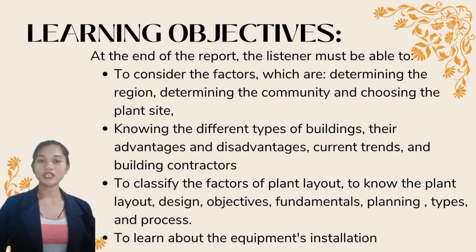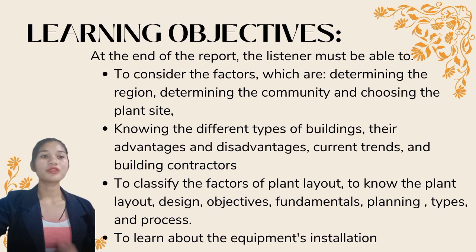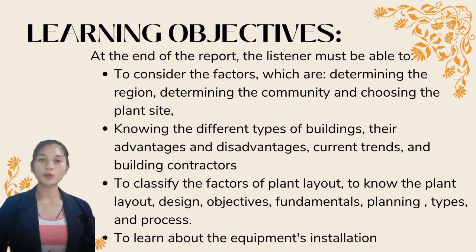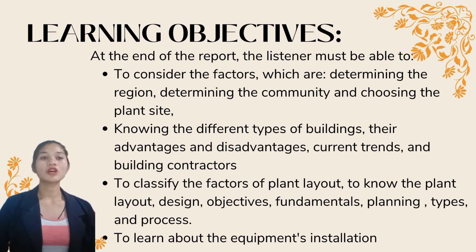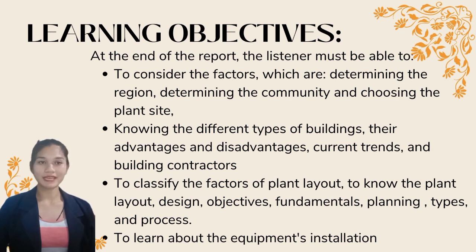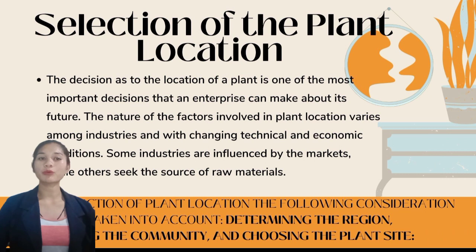Here are the learning objectives. At the end of the report, the listener must be able to: first, consider the factors determining the region, the community, and choosing the plant site; second, know the different types of buildings, their advantages and disadvantages, current trends, and building construction; third, classify the factors of plant layout, know the plant layout design objectives and fundamentals, planning types, and process; and last, learn about equipment installation.